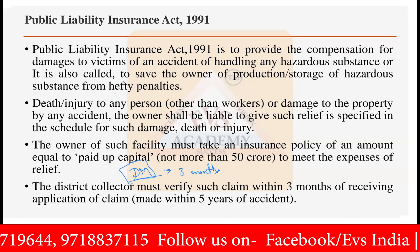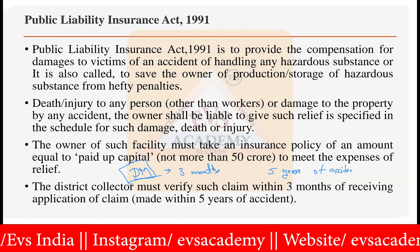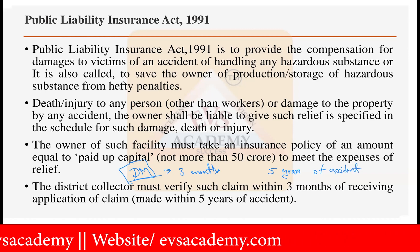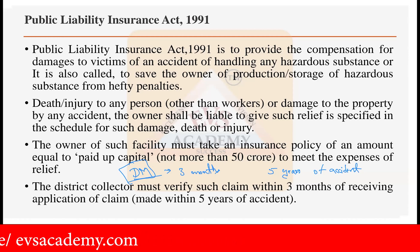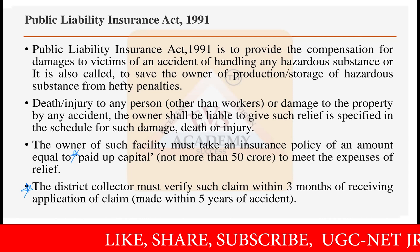Another important point: the claim must be filed within 5 years of the accident. For example, victims of the Bhopal gas tragedy cannot claim compensation now because that accident is over 36 years old. If the accident happened more than 5 years ago, no claim will be provided; it would be directly cancelled by the district magistrate. Two very important things to remember: paid-up capital and the 5-year time duration for claims.